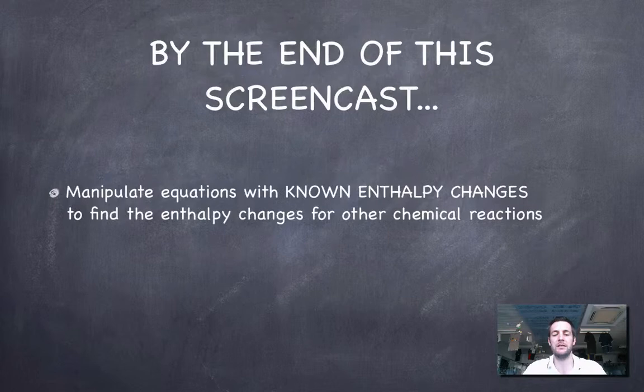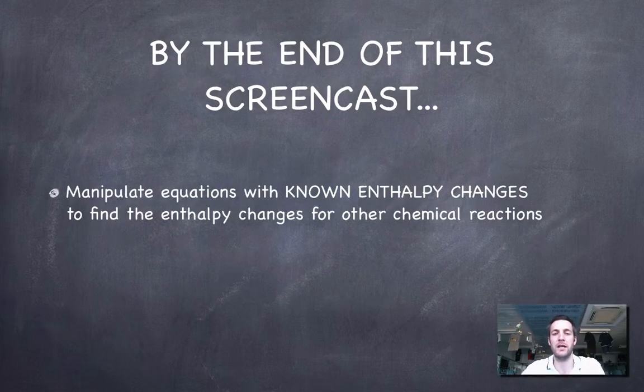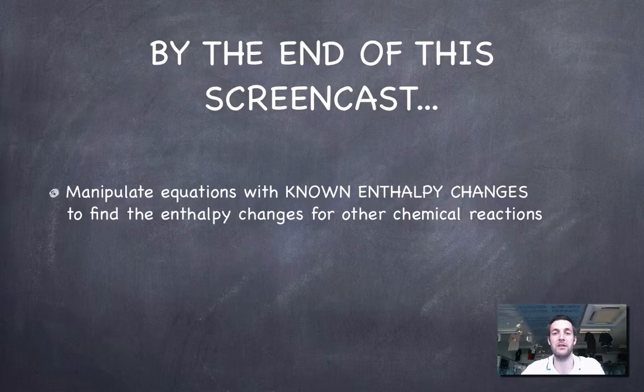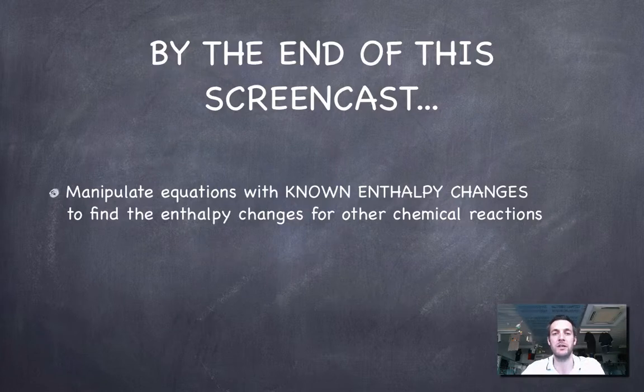That's the end of that one, and hopefully you understand how we can manipulate equations with known enthalpy changes to find enthalpy changes for other chemical reactions. So that was the maths method that didn't involve cycles. If you've got any questions about it or any comments at all, then please feel free to come and see me or to post a comment on YouTube.